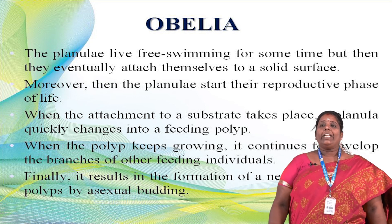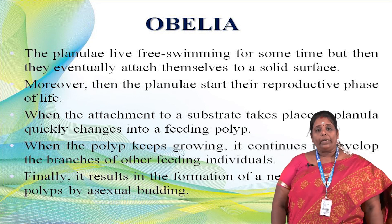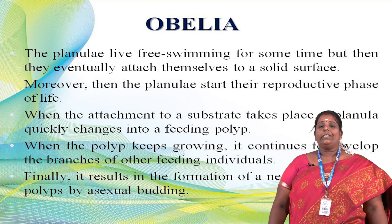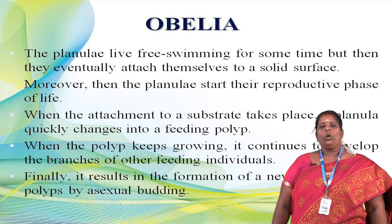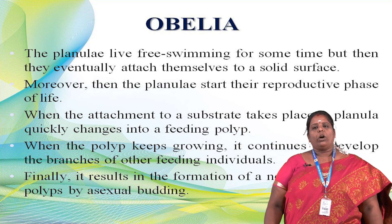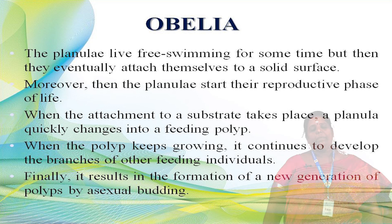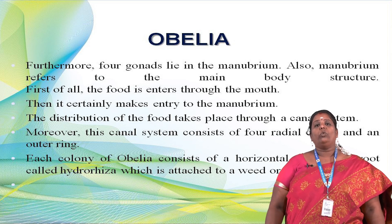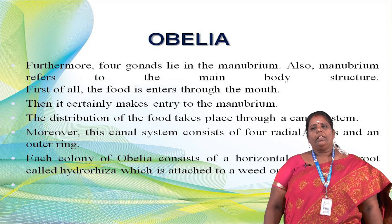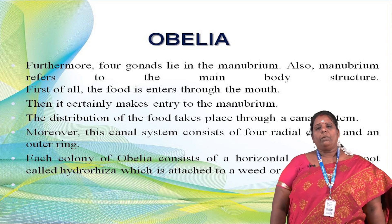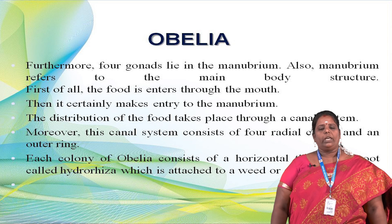The planula larva lives as a free-swimming organism for some time and eventually attaches to a solid surface, starting the reproductive phase of life. When attached to a substrate, the planula quickly changes into a feeding polyp. As the polyp keeps growing, it develops branches into feeding individuals. This results in the formation of a new generation through asexual budding. Food enters through the mouth into the manubrium and is distributed through the canal system — specifically the radial canals.